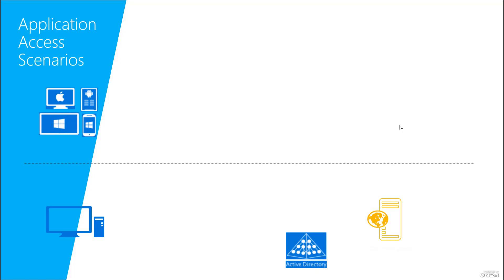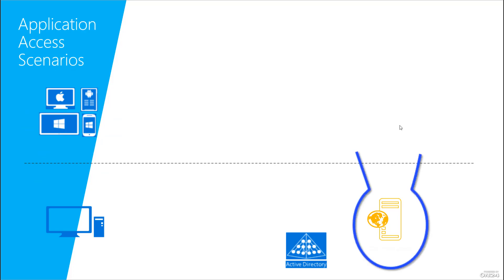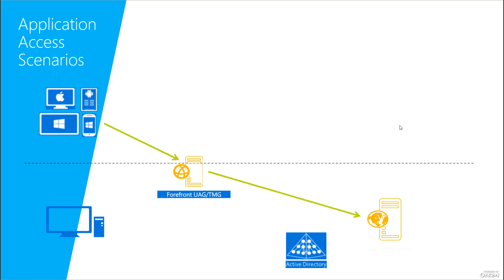Now we have a lot of other devices — mobile computers, Windows phones, Android phones, tablets. We have so many devices and our users now use these devices. We have to find a way to give access to that specific web application located on-premises to every external user working with these devices.